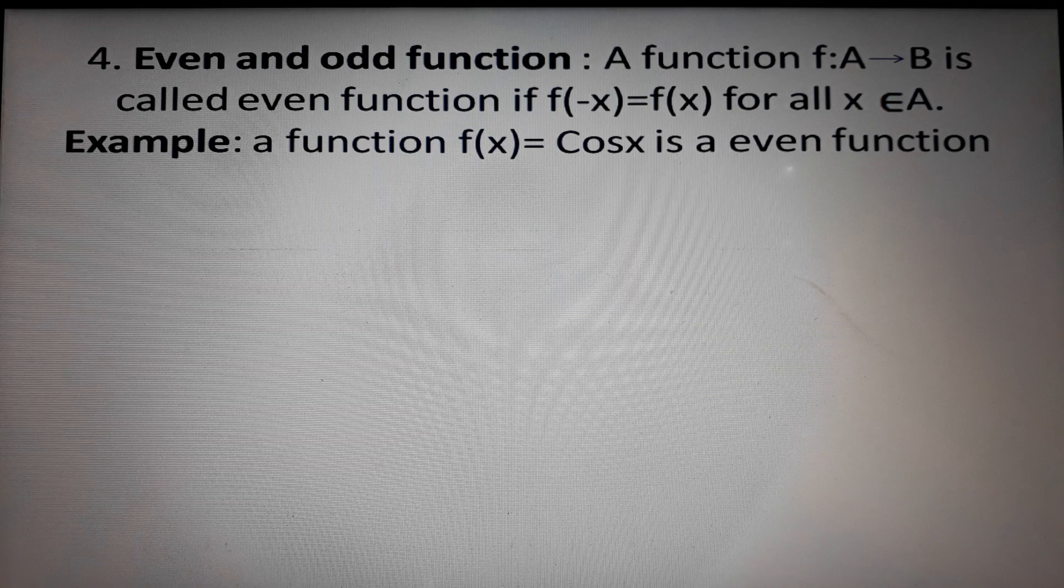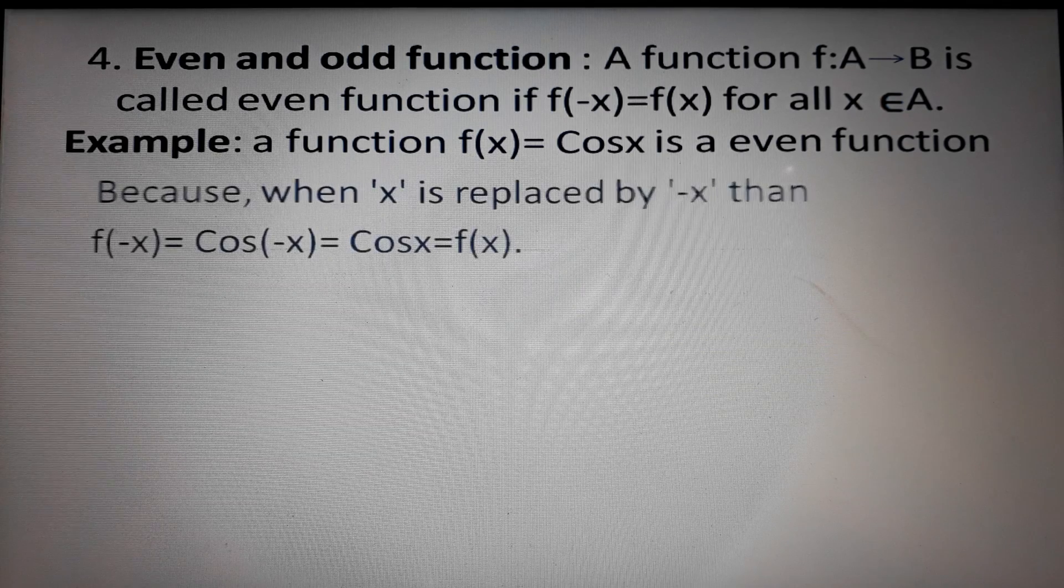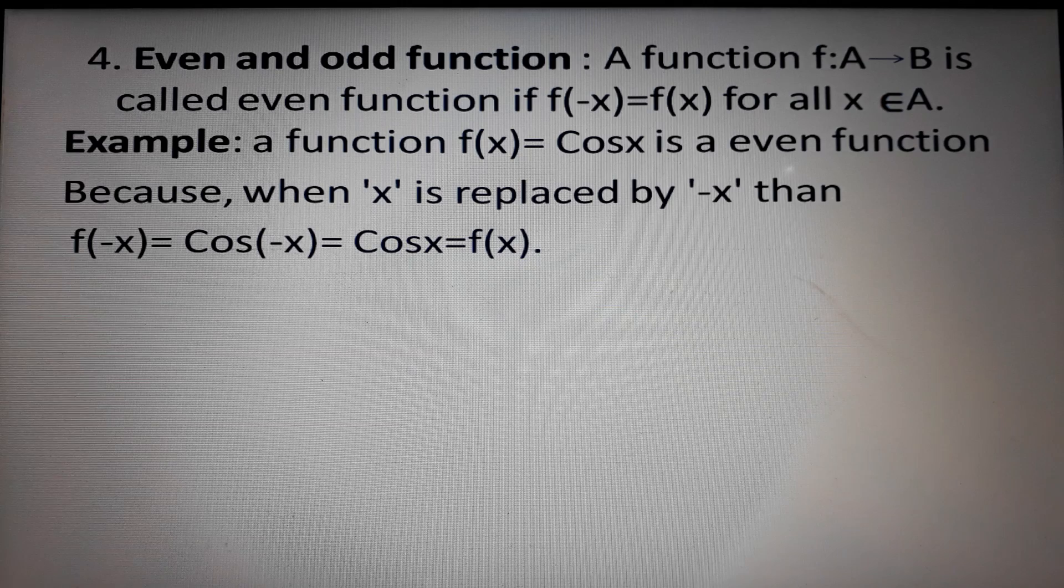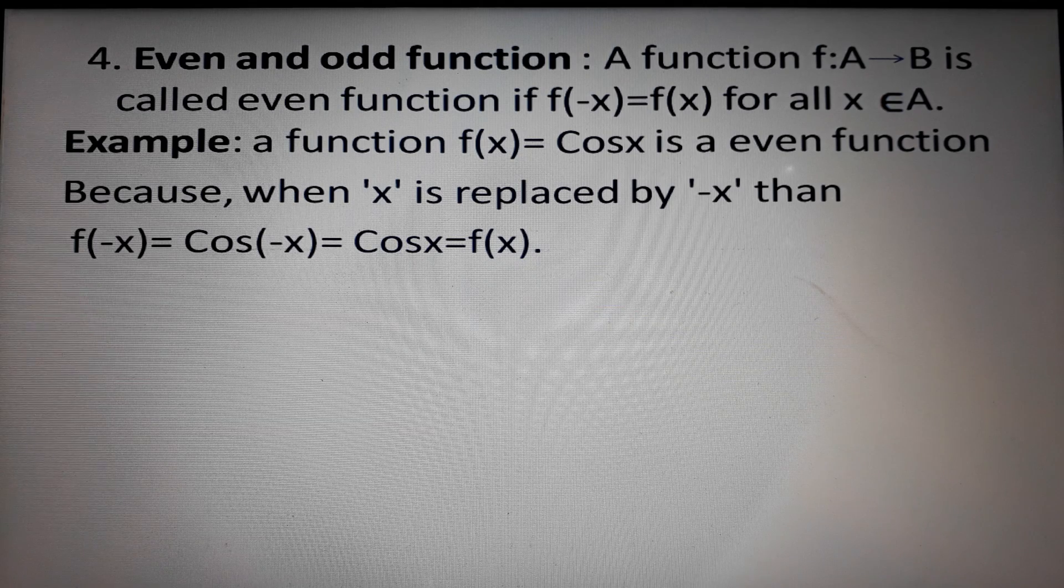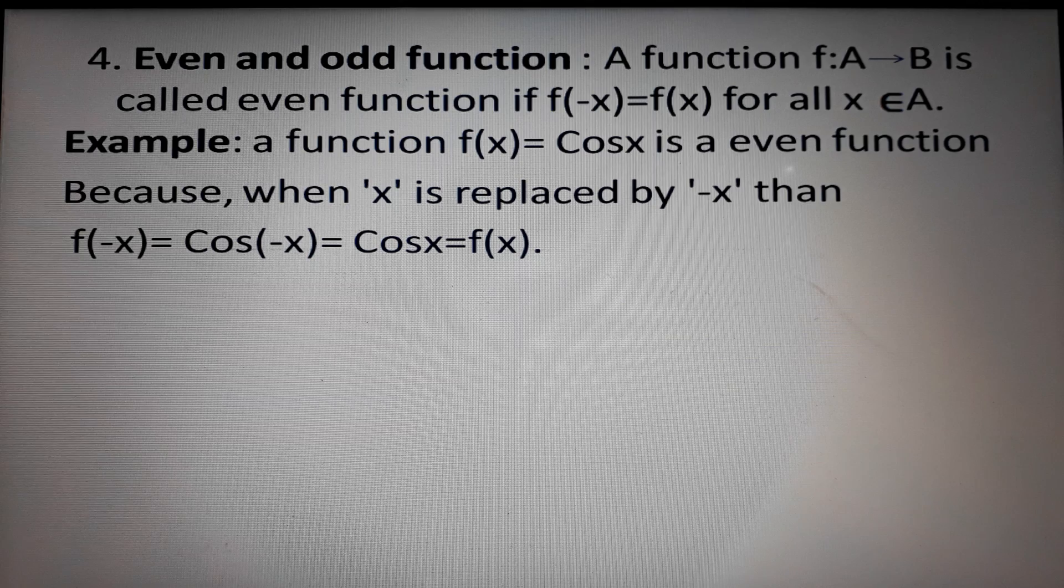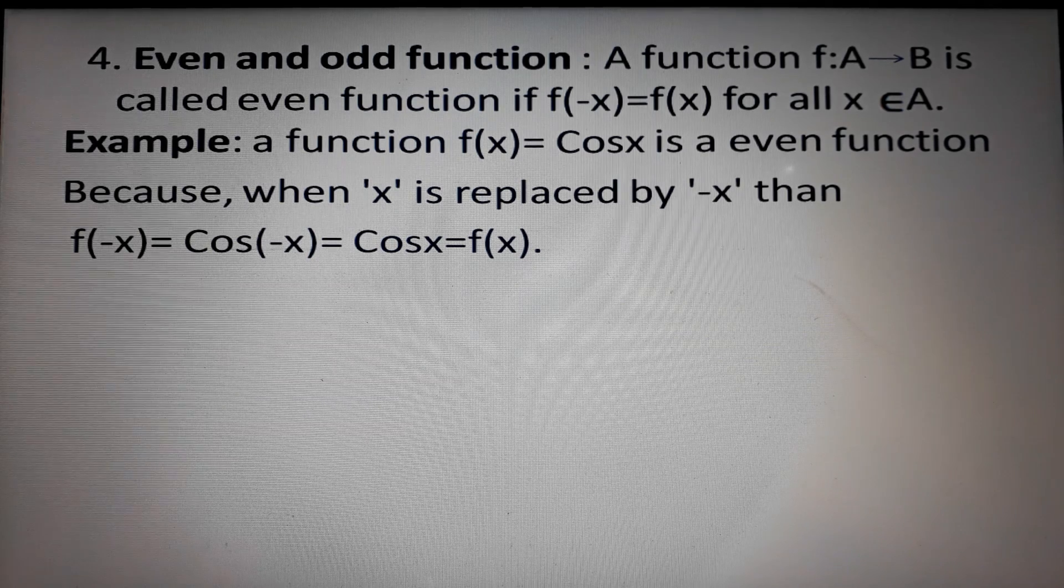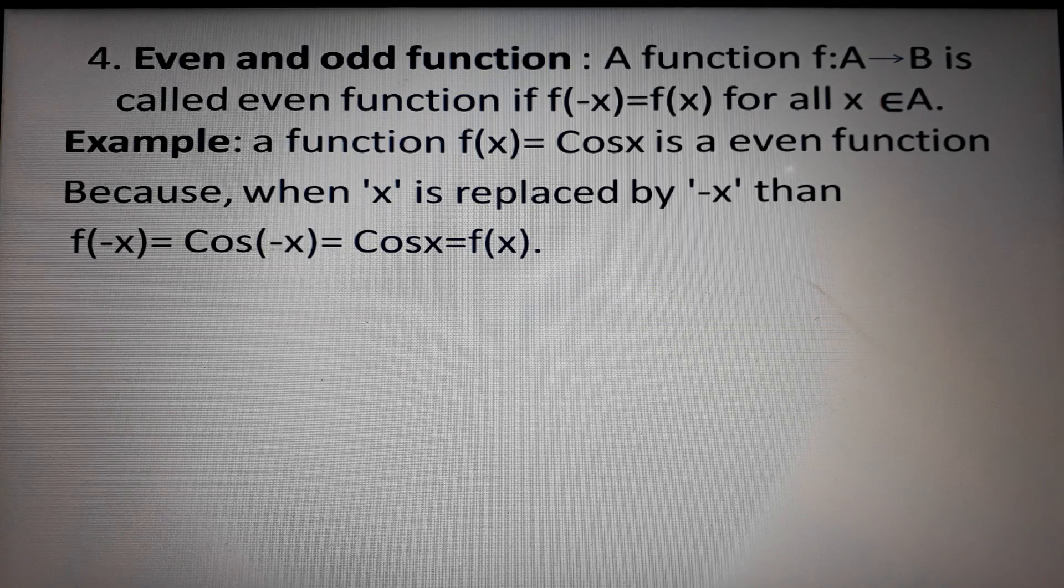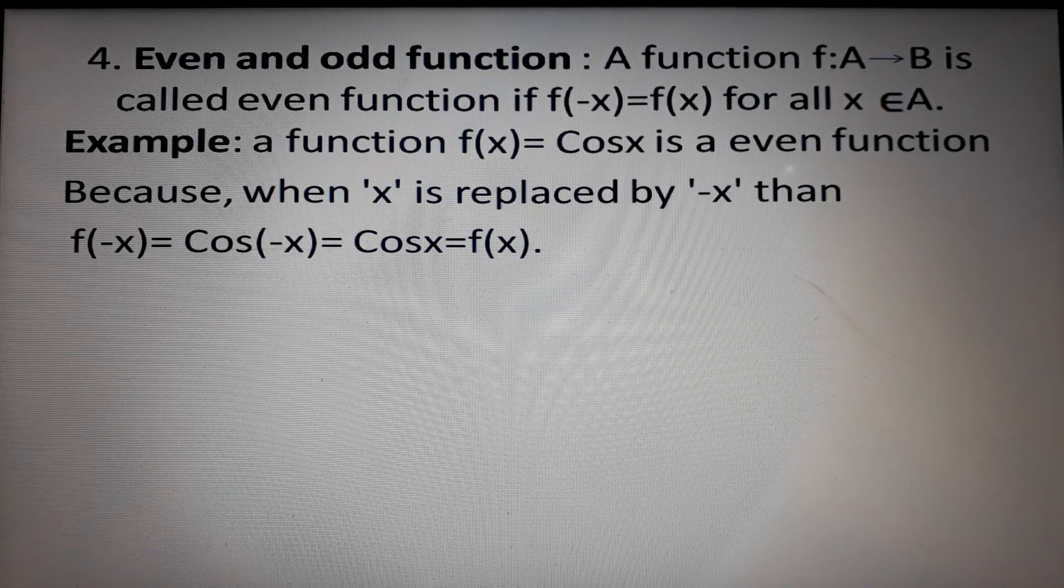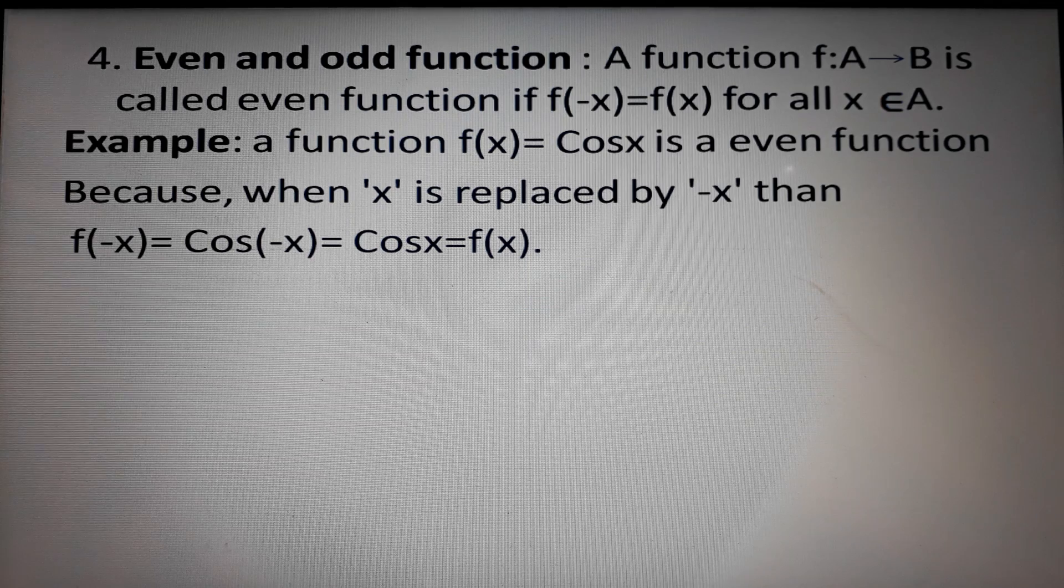A function f(x) = cos x is an even function because when x is replaced by -x, then f(-x) = cos(-x), and by using the cast rule, cos(-x) = cos x = f(x). Therefore, we can write that f(-x) = f(x). So it is an even function.